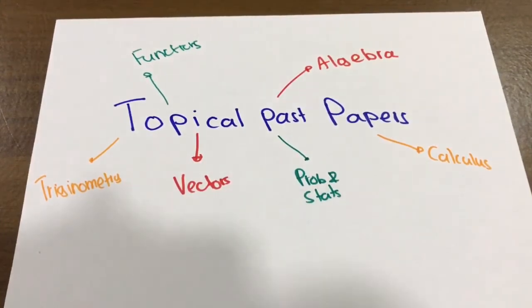This is so true for chapters like statistics and probability, vectors. There are like 10 to 12 different types of questions that they ask you for vectors, in algebra, in trig. There are a lot of these patterns that show up in Section A.